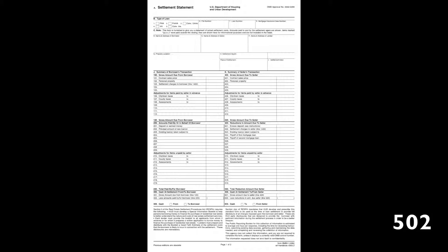On line 502 in the 500 section, we're going to add your mortgage payoff, any assessment balances that may be affecting the property or association dues, and any proration of taxes — if you owe the seller or the buyer any money for the portion of the taxes. Up at the top in the 400 section, we give you a credit for the purchase price and anything that the buyer may owe you as a proration, such as association dues or proration of taxes.